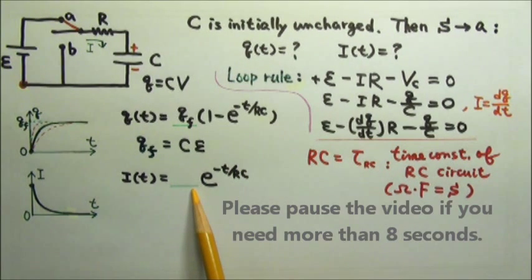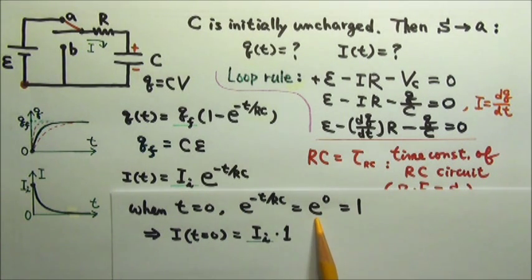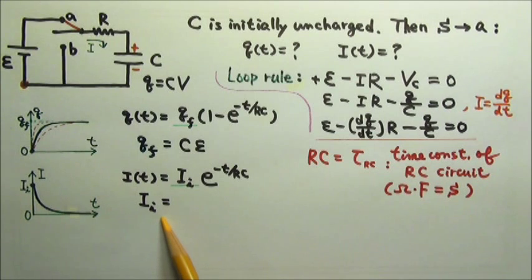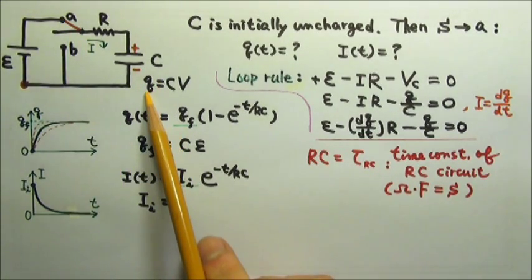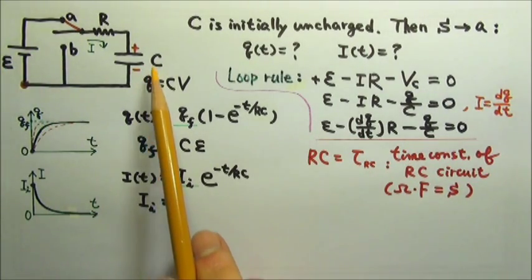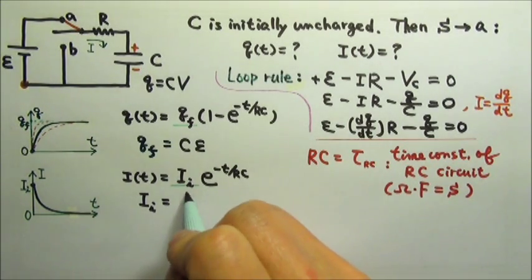What goes here is the initial current, because when t equals zero, the exponential decay part equals e to the zero, which is one. That means what goes here must be the current the moment the switch goes to A. The moment the switch is closed, there is still no charge on the capacitor, so the capacitor gets zero volts. Since they share the total voltage and the capacitor gets zero, the resistor gets all of the EMF. So the initial current is V over R, which is E over R.